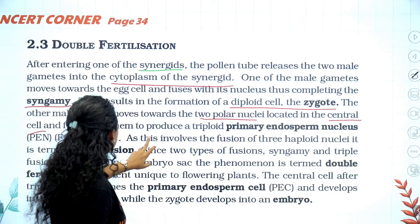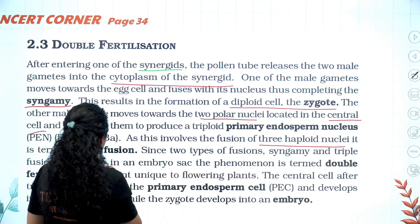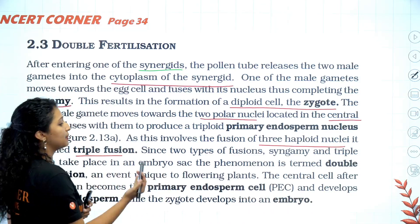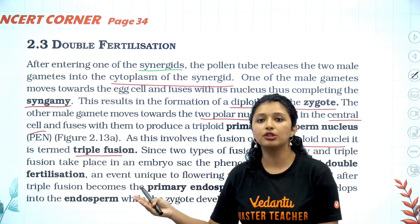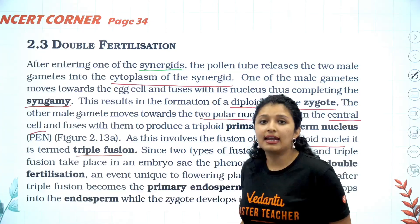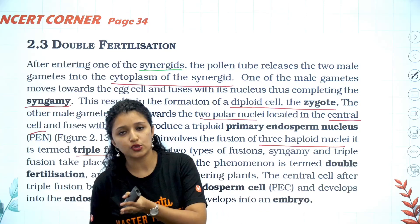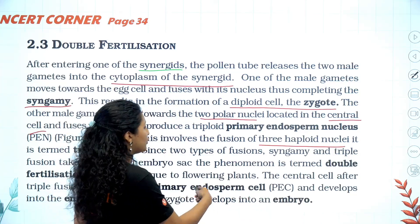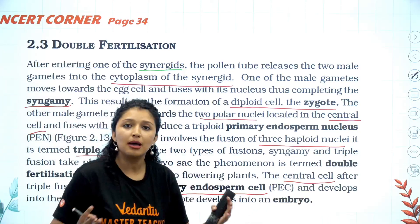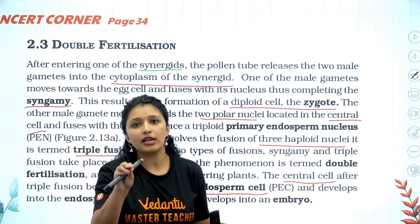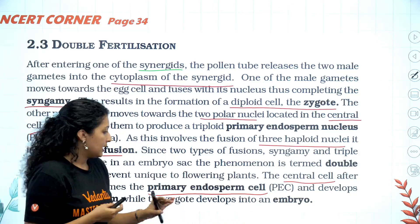Three haploid nuclei fuse together — we call it triple fusion. When you say the overall answer, we call it double fertilization. The male nuclei fuse with the polar nuclei in the central cell — the process gives the primary endosperm cell and the primary endosperm nucleus, plus the zygote.